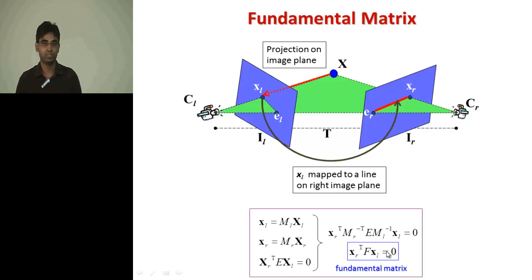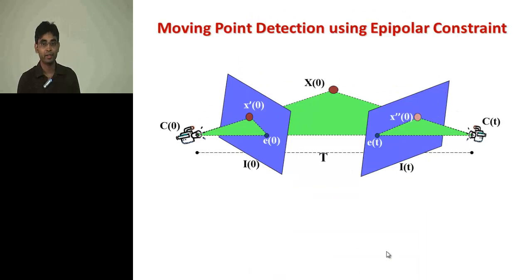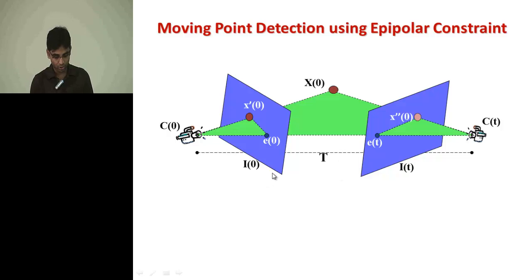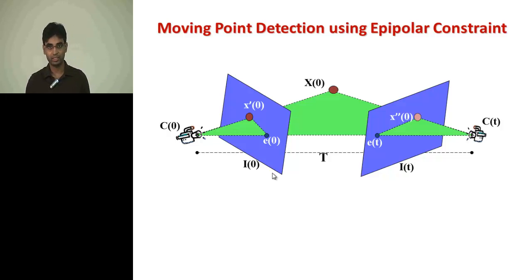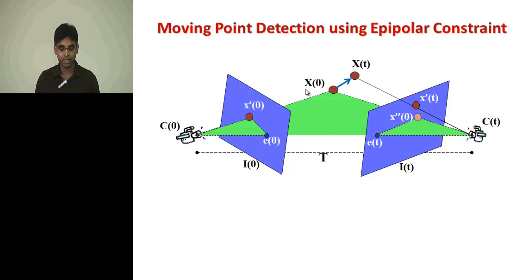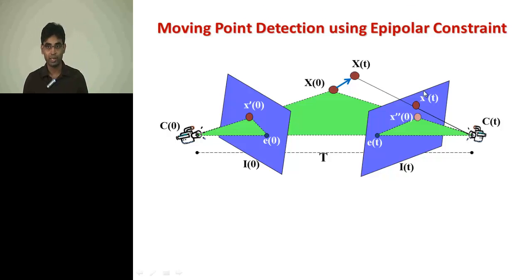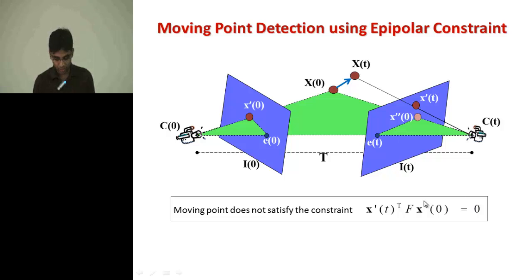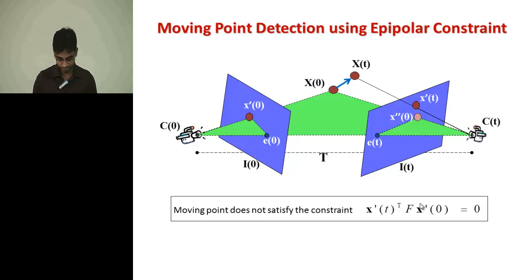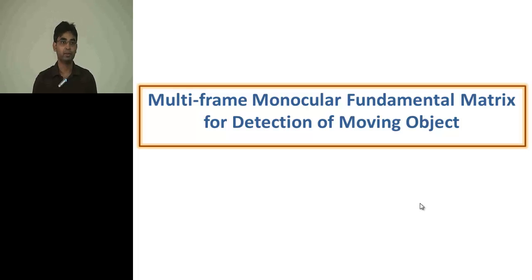Each point on this epipolar line satisfies the well-known epipolar constraint equation: XR_transpose * F * XL = 0, where F is the fundamental matrix, a three-by-three rank-two matrix. We use this constraint to find moving objects. When a moving point X moves to a new location X_t, its projection on the right image plane is no longer on the epipolar line, violating the epipolar constraint and producing a large error value that allows us to segment out moving points.